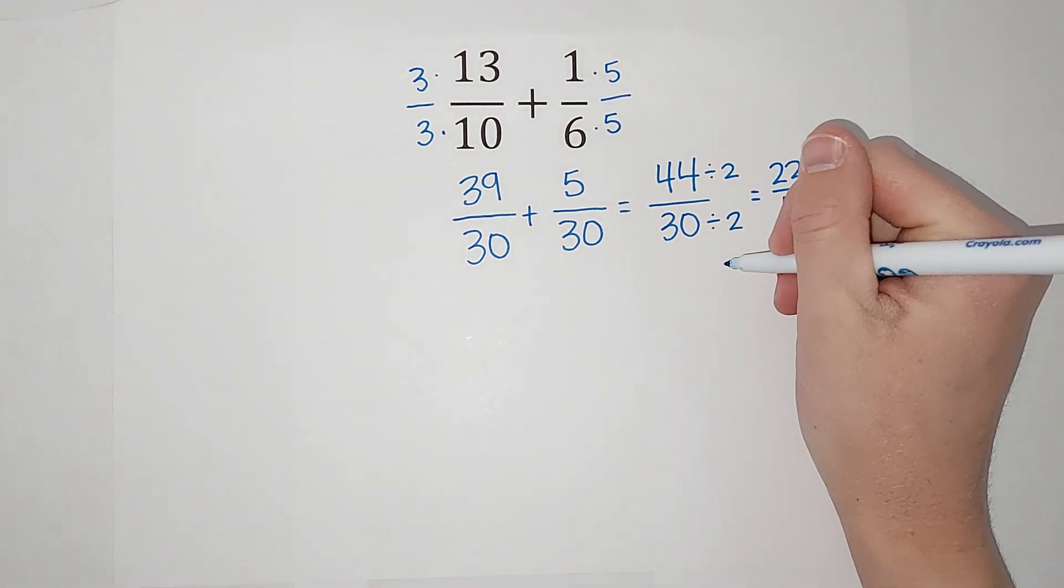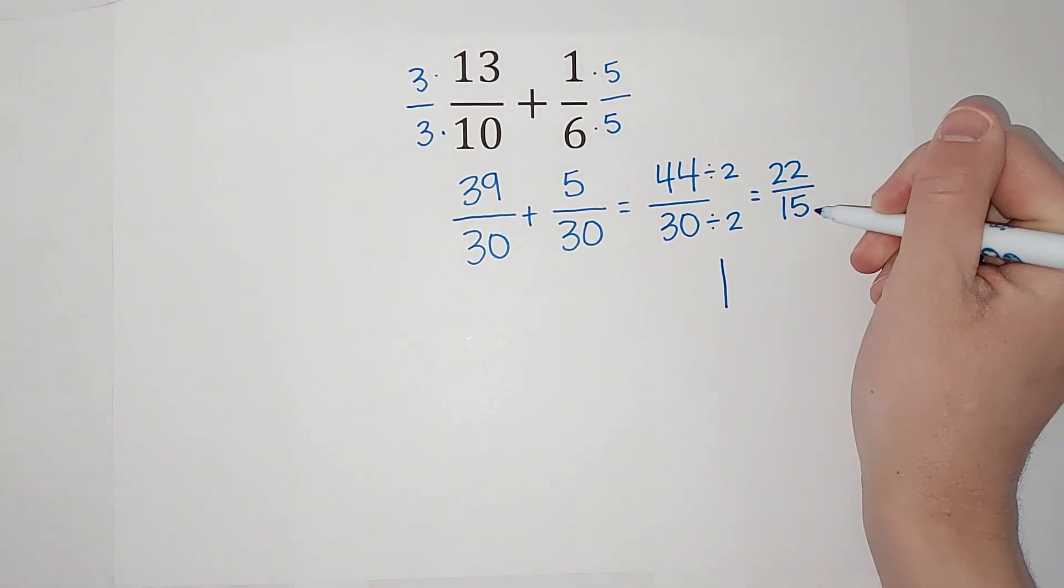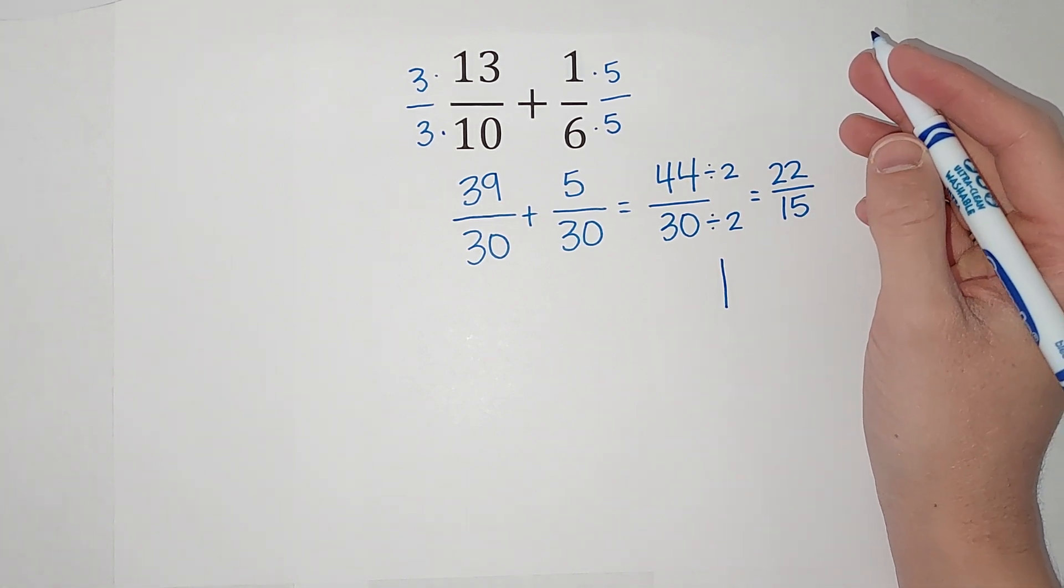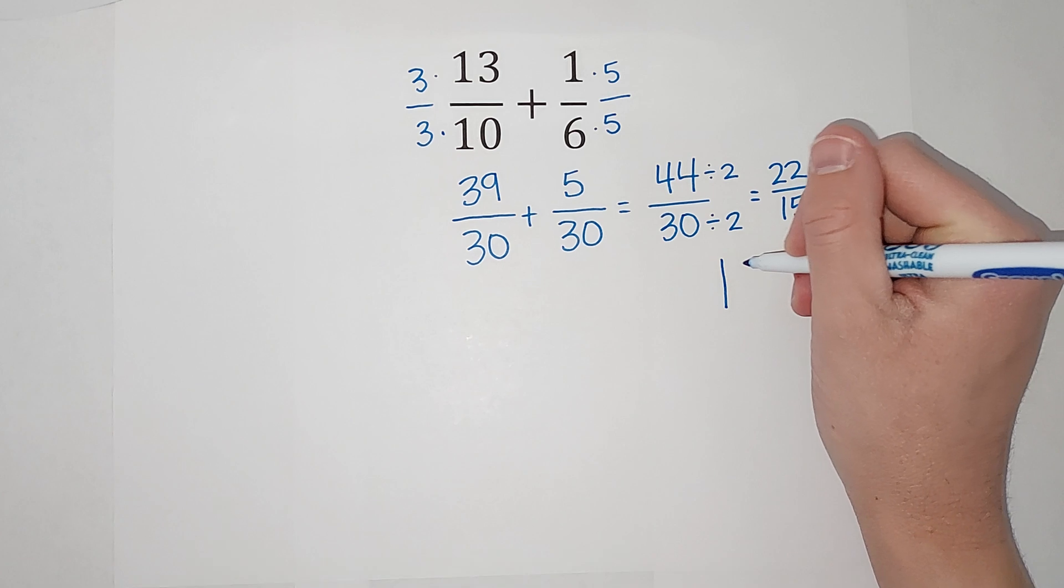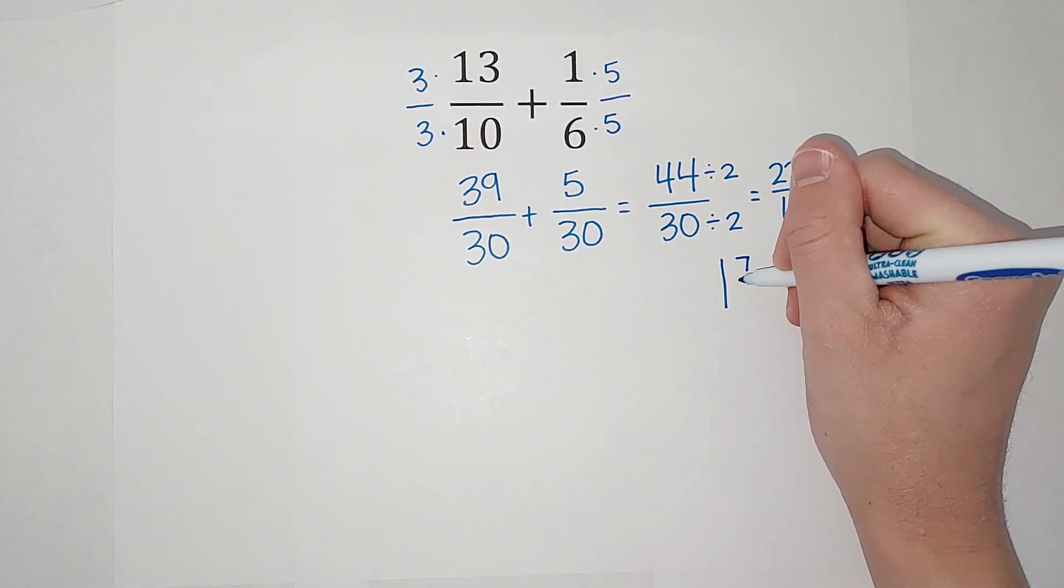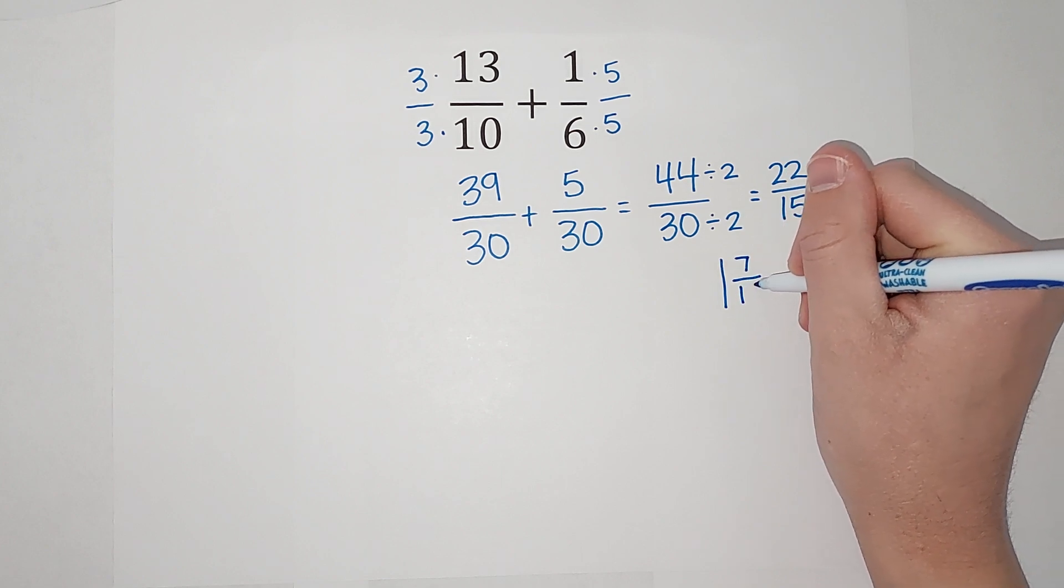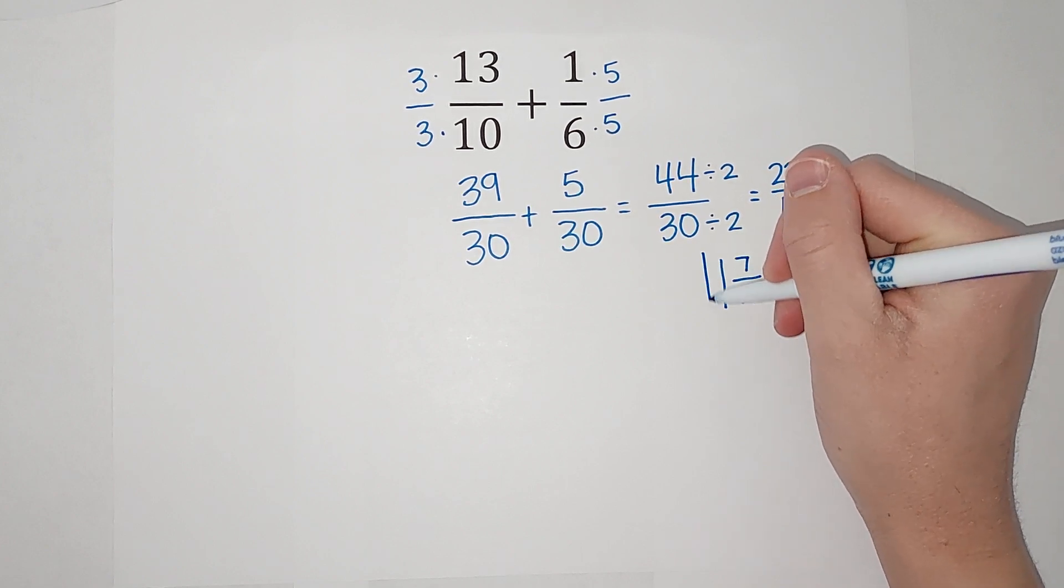To do that, I ask myself, how many times does 15 go into 22? Well, it just goes once, so that's my big number. 15 goes into 22 once, but it doesn't go evenly. How many are left over? There's seven left over; that's my numerator, and my denominator stays the same as 15.